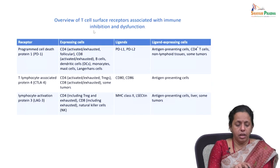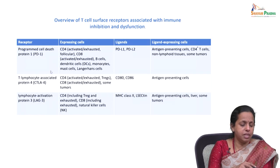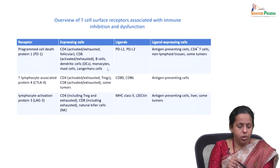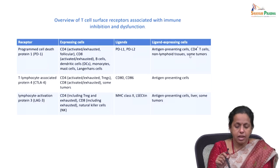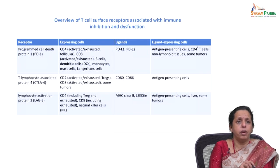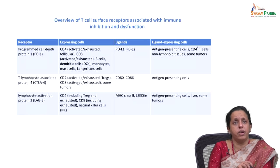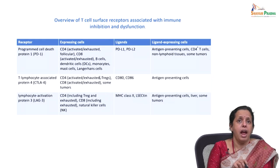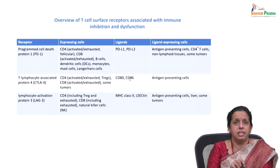A brief overview of receptors associated with inhibitory immune dysfunction: Programmed cell death protein 1 (PD-1) is expressed by CD4, CD8 B lymphocytes, dendritic cells, monocytes, mast cells, and Langerhans cells. It binds to its PDL1 and PDL2 ligands, which are expressed on antigen presenting cells, CD4 T cells, non-lymphoid cells, and some tumor cells. T lymphocyte-associated protein 4 (CTLA-4) is expressed by activated CD4, exhausted Treg, and CD8 tumor cells, with ligands CD80 and CD86 expressed on antigen presenting cells.